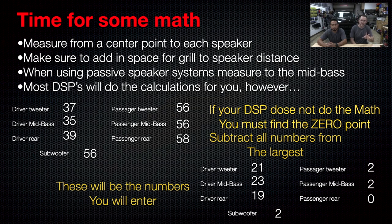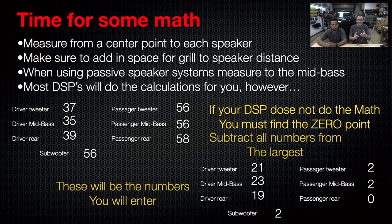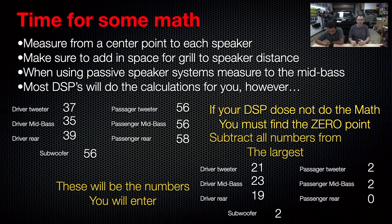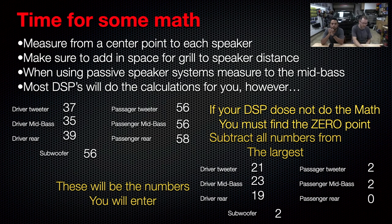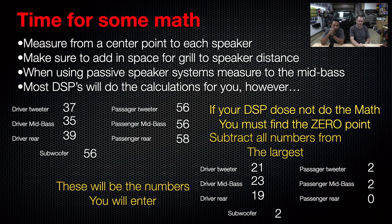A lot of DSPs — the cheaper DSPs like the Alpines, the Nakamichi, the Dayton, and others that use the same basic software — they want you to do your basic math and figure out your zero point; they're not going to do it for you. And they can come up with some really weird numbers that make the car sound very strange, so don't do that. The best way to think about it is: if you enter the normal numbers and it sounds weird, go back and try doing the zero point and it'll usually clear that up.